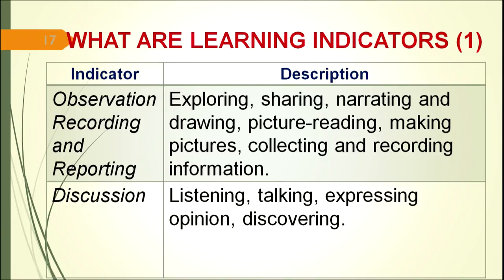The first and foremost important EVS indicator is observation, recording and reporting. Observation is a very, very important process of EVS learning — 50% of learning is mainly through observation. Children explore the environment through observation and learn many things. Sub-activities under observation include: sharing, narrating and drawing, picture reading, making pictures, collecting and recording information.